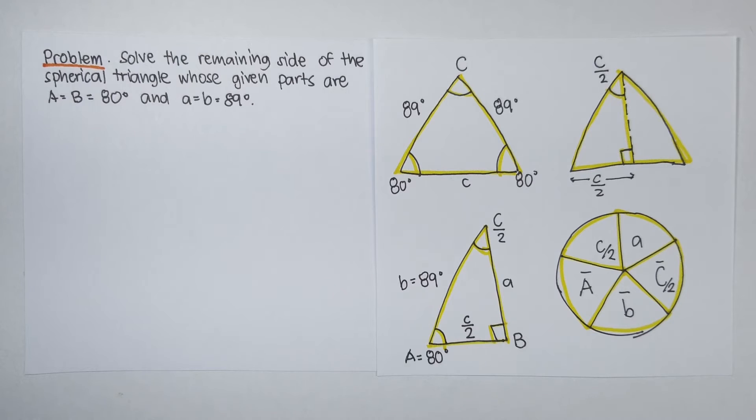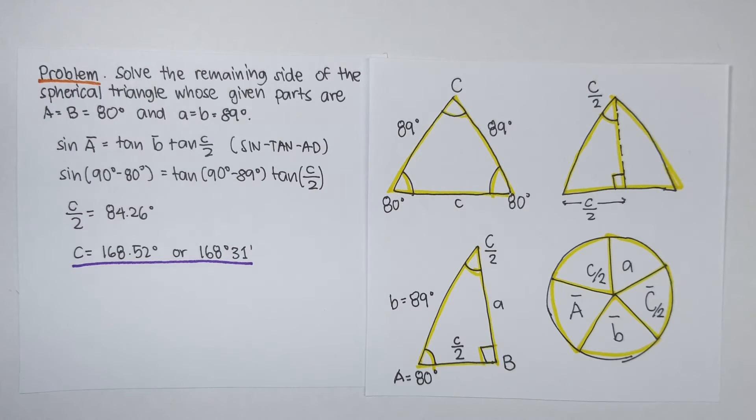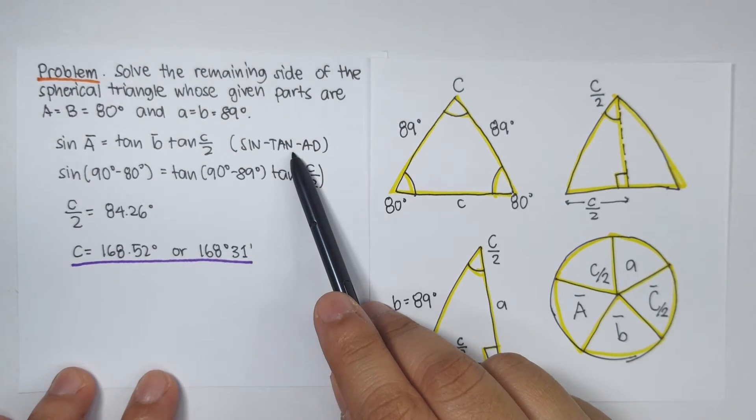So, this is our Napier's circle. We know the value of angle A and side B. Unknown is side C. So, we can use sin tan ad rule for this one.